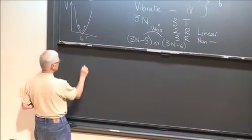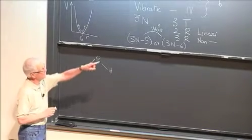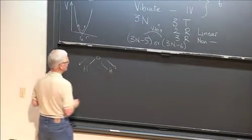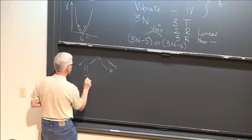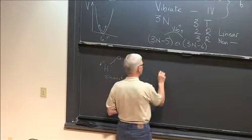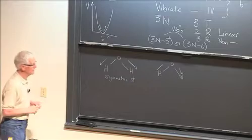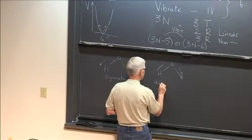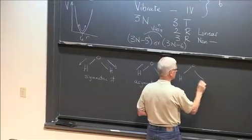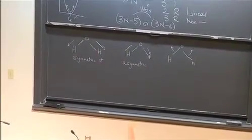For example, if we looked at water, there are three vibrations — 3 times 3 minus 6 equals 3. There's the vibration where the two H's are stretching out together, called a symmetric stretch. There's the vibration where one atom is coming in when the other one is going out, called an asymmetric stretch. And then finally there's the bend, where the atoms open out and close. Those are the three vibrations for a simple molecule like water.